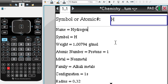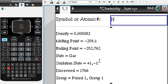Again, you have name hydrogen, symbol, weight, atomic number, metal, family, configuration, everything. It's all here for you guys.